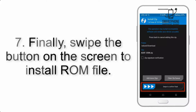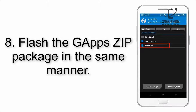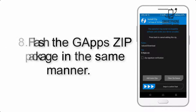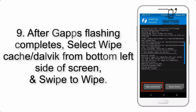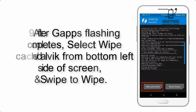Step 6: Navigate to the storage and select the ROM zip file. Step 7: Swipe the button on the screen to install the ROM file. Step 8: Flash the GApps zip package in the same manner.